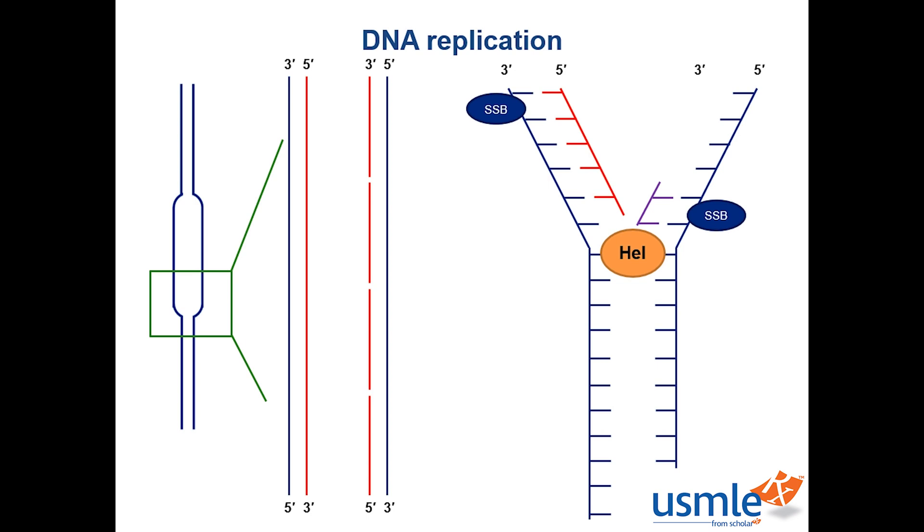Once a primer has been laid down, our friend DNA polymerase 3 can jump in and start adding deoxyribonucleotides to it just like it did for the leading strand. DNA can only be synthesized in the 5' to 3' direction, so DNA polymerase 3 starts from the RNA primer and builds towards the 3' end of the new strand.